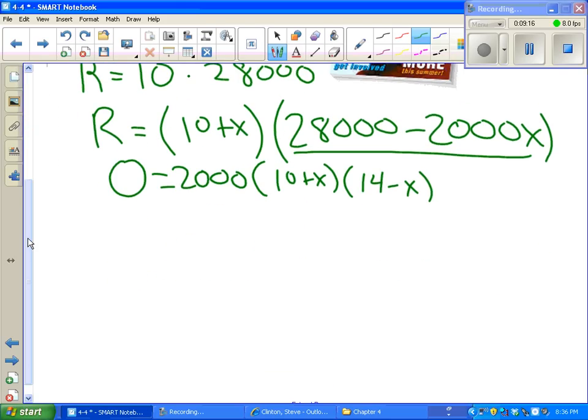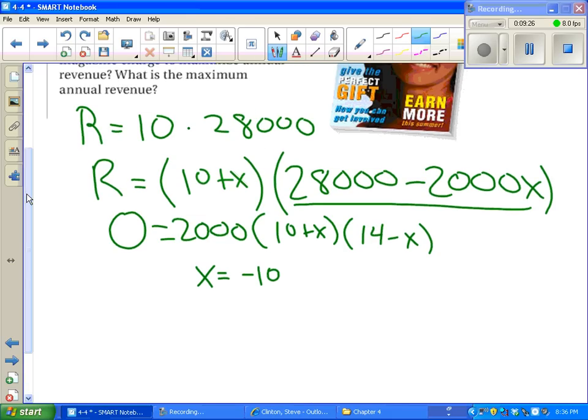So the two ways we can get a revenue of zero is by making the magazines cost negative $10 each, or we can not cost negative $10 each, but lower the price by $10. That would make our revenue zero because we're selling them for free. Or we can make the revenue up by $14, meaning we charge $24 for the magazines. That would also give us a revenue of zero. No one would buy them. We want something right in the middle. That's how we find our vertex. Take our negative 10 plus 14, divide by 2. And we get 2. That's the x value of the vertex.